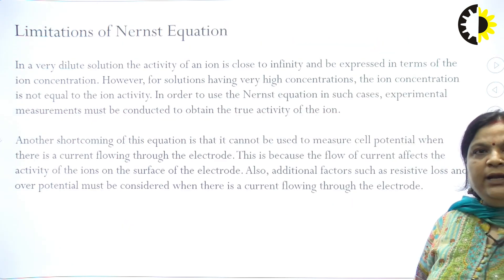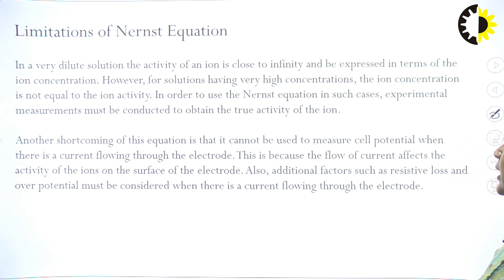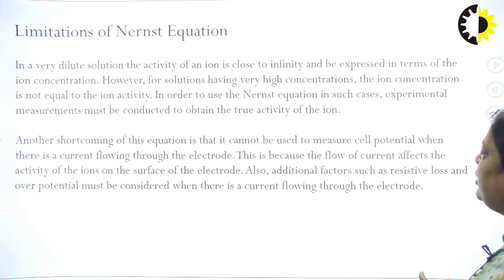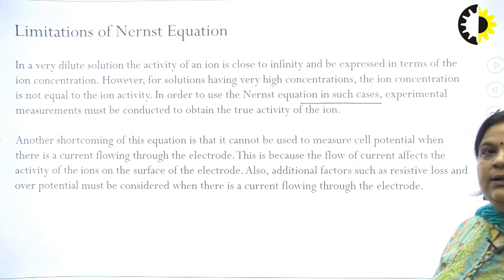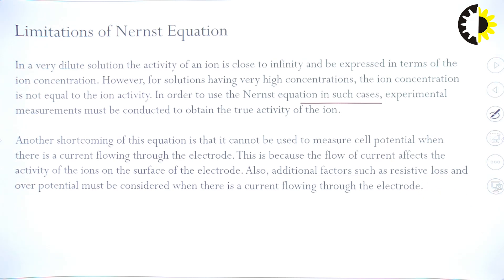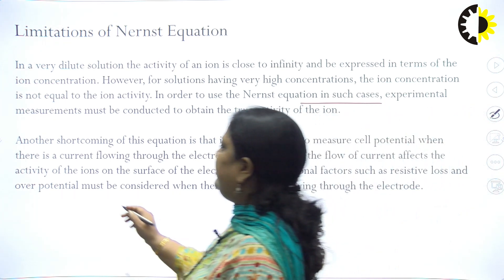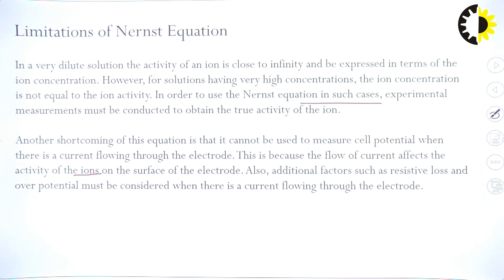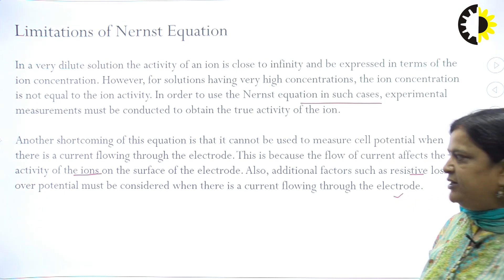Limitations of the Nernst equation: In very dilute solutions, ionic activity approaches the ion concentration, but for highly concentrated solutions, concentration no longer equals true ionic activity, so experimental measurements must be used. Also, it cannot be used when current is flowing through the electrode, as current affects ionic activity on the electrode surface. Additional factors such as resistive loss and overpotential must also be considered.